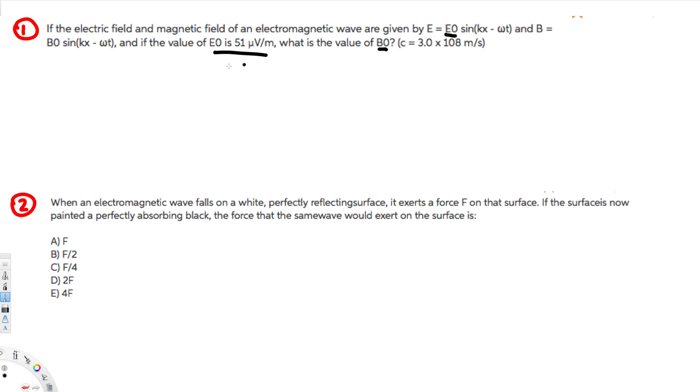In order to calculate B naught, amplitude of magnetic field, we can use this equation: B naught equals E naught by C. So that's the generic equation.